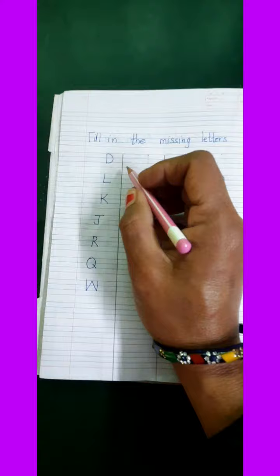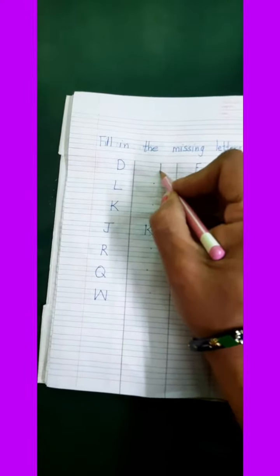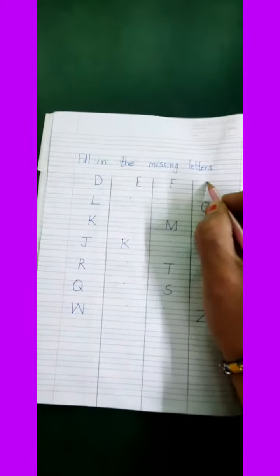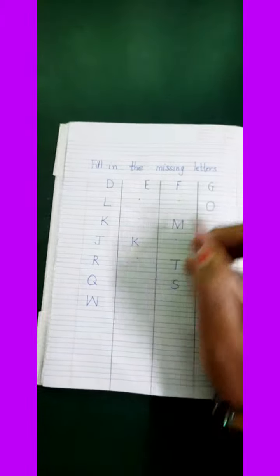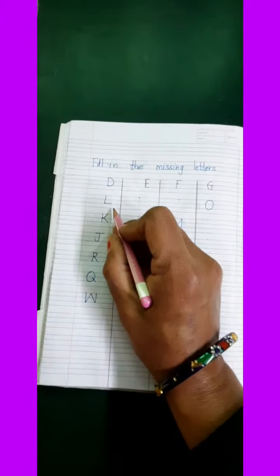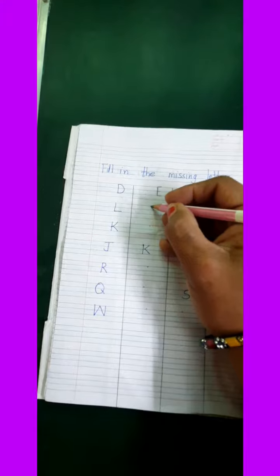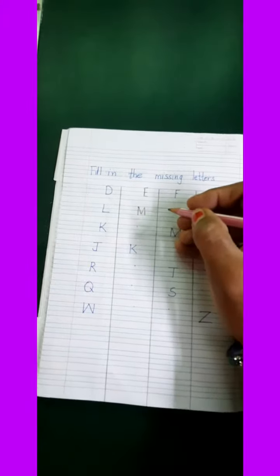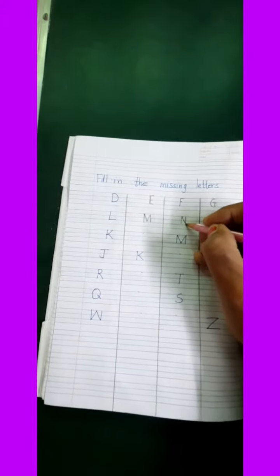What letter is this children? D. What comes after D? E. F. Then G. Now what letter is this children? L. What comes after L? M. After M children, N. O.